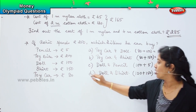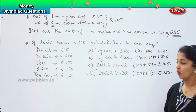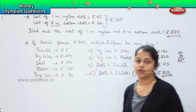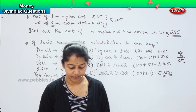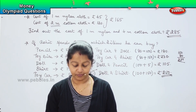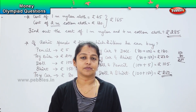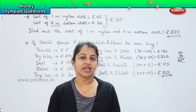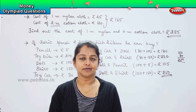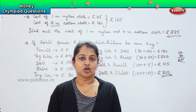It is doll and a shirt, which works out to be 250 rupees. So are you clear with these types of questions, children? Did you enjoy doing the money sums? They were all interesting and we have covered so many questions. See you all in the next topic.